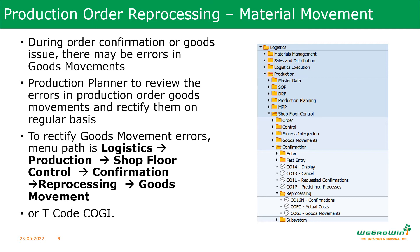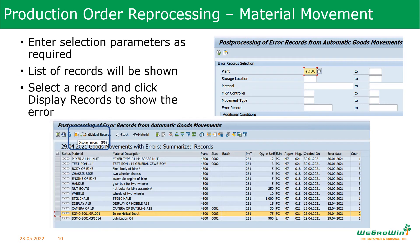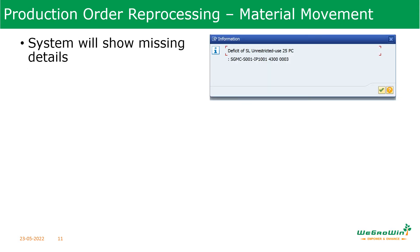To rectify material movement errors, use transaction code COGI. After entering COGI, go to the selection screen, enter parameters such as the plant, and a list of records with errors will be shown. Select the line item you want to rectify, click the 'Display Records' button to see what kind of error exists. For example, the system may show a deficient stock of a certain material in a particular location.